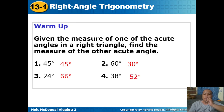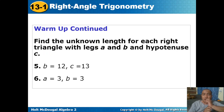Another warm-up: find the unknown length for each right triangle with legs A and B and hypotenuse C. For number five, we have a right triangle with B = 12 and C = 13. C is the hypotenuse and B is one leg. Using the Pythagorean theorem, A squared plus B squared equals C squared. So 13 squared minus 12 squared is 169 minus 144, which equals 25. The square root of 25 is 5, so A equals 5.